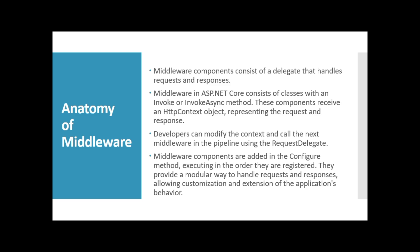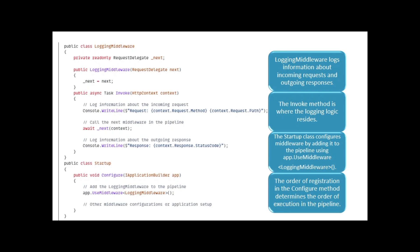We have basically three request delegates. One is the app.Use method, which processes the middleware in sequence or order. Then we use app.Run to end the middleware pipeline — the last middleware calls app.Run. We also have the app.Map method.